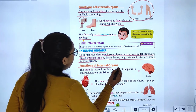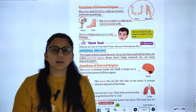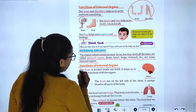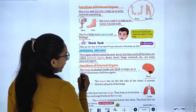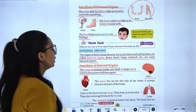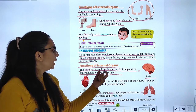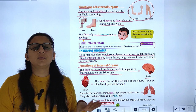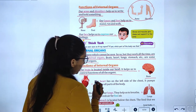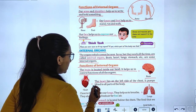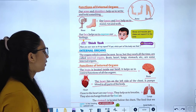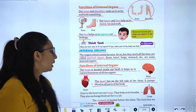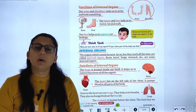Now the functions of internal organs. The brain is located inside our head and helps us to control the function of all the organs. The heart lies on the left side of the chest and pumps blood to all parts of the body.